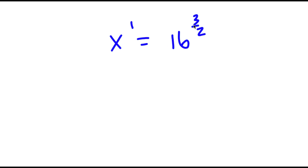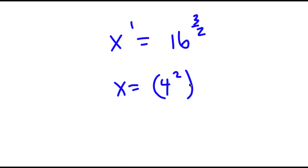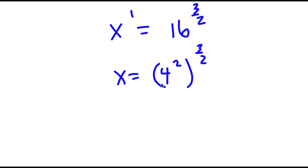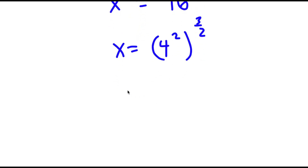So I have x equals 16 to the power of 3 over 2, and we actually have to simplify this a little bit. So 16 to the power of 3 over 2 — well, 16 is the same thing as 4 squared. So now I have 4 squared to the power of 3 over 2. And remember, if I have something in the form a to the power of m to the power of n, that's equal to a to the power of m times n. So this is equal to 4 to the power of 2 times 3 over 2 — now these 2s can simply cancel out.